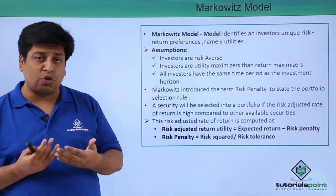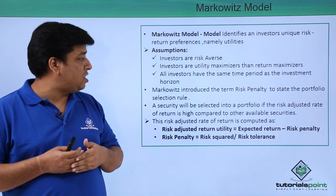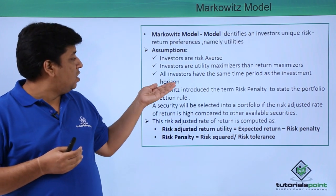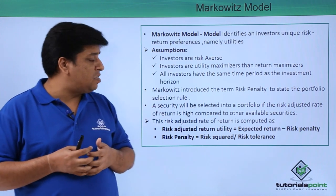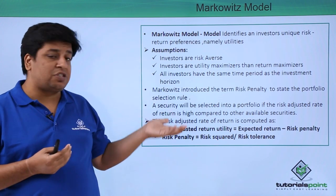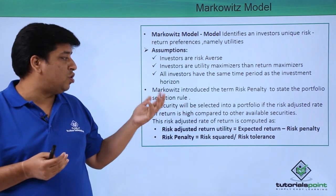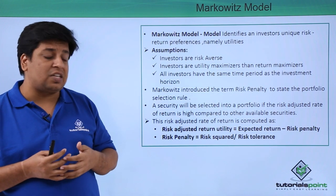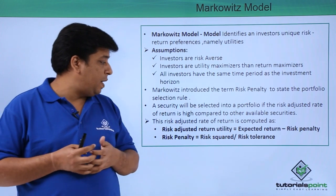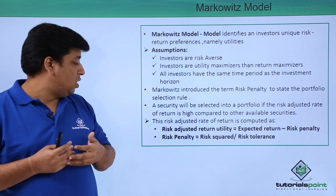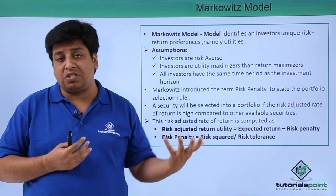Now let's look at the assumptions of the Markowitz model. First, investors are risk averse. Second, investors are utility maximizers rather than return maximizers. Third, all investors have the same time period as their investment horizon. Markowitz also introduced the term 'risk penalty' to state the portfolio selection rule — a security will be selected into a portfolio if its risk-adjusted rate of return is high compared to other available securities. Risk-adjusted return means you take into consideration both risk and return.